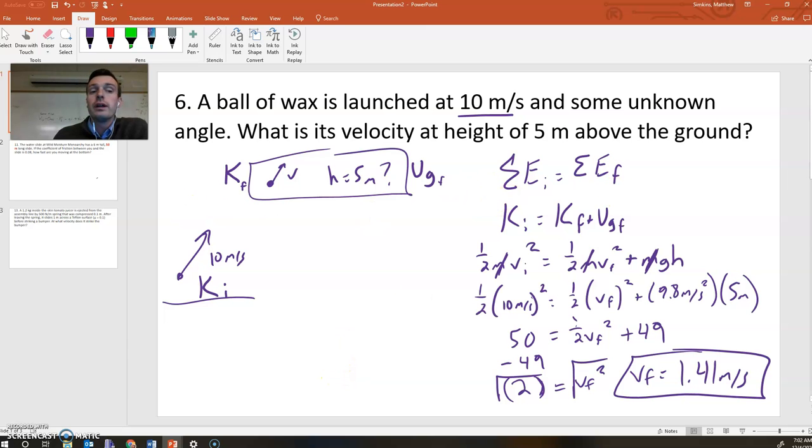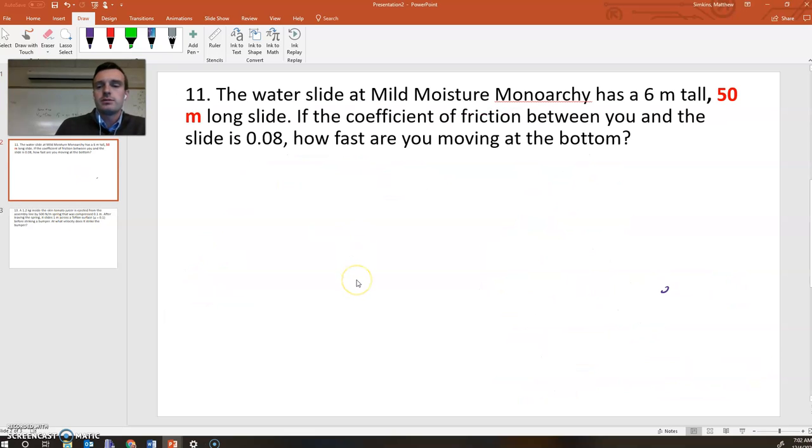And there it is. The velocity final is 1.41 meters per second, all right? So the idea here is you set the total energy at the beginning equal to the total energy at the height of 5 meters. Identify what kinds of energy and write your conservation of energy expression.